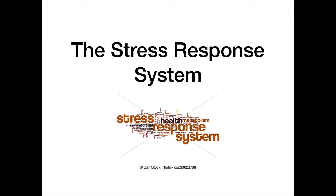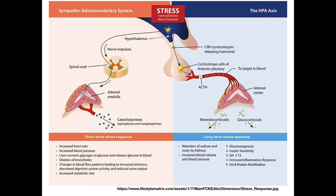We're going to talk about the stress response system. There are two different arms of the stress response system. On the left of this picture you see the sympatho-adrenal medullary system, and on the right you see the HPA axis. The brain is going to interpret signals whether they're external or internal, real or perceived, and then activate both systems. The key point is it doesn't matter what kind of stress it is — it just matters that it's there.